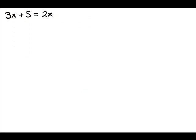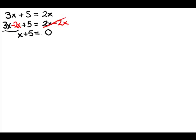We'll look at one more example of an equation with a variable on both sides, and I'm going to do this one both ways. First I'll get rid of the 2x by subtracting it. Notice on the right-hand side it's going to wipe that side out. When that happens you have to write a zero because you must have two sides. A lot of times students just move the equals over — that's an illegal step. You can always fill in zero if a side cancels.